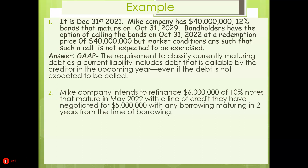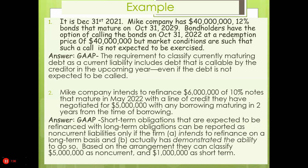Example two: my company intends to refinance $6 million of 10% notes that mature in May 2022 with a line of credit. They have negotiated for $5 million, with any borrowing maturing in two years from the time of borrowing. In this case, we'd have to break it out: $5 million we don't have to worry about for two years, but $1 million we would have to put as current. Short-term obligations expected to be refinanced with long-term obligations can be reported as non-current only if the firm intends to refinance and has demonstrated the ability to do so. Based on the arrangement, they can classify $5 million as non-current and $1 million as short-term.